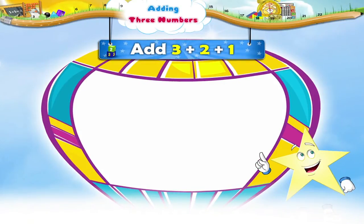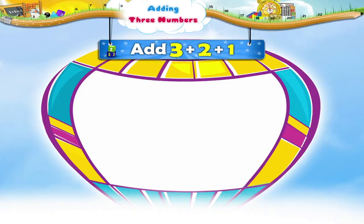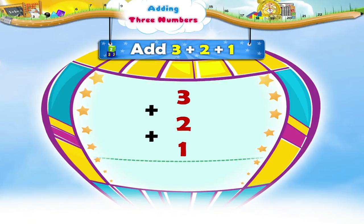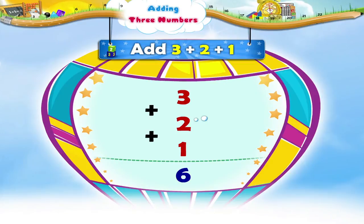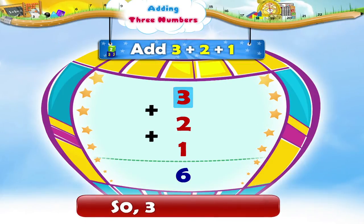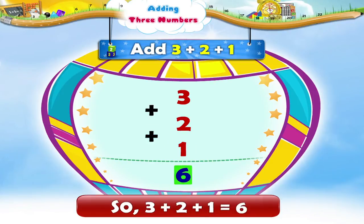Look at this sum. There are three numbers which we have to add: three plus two plus one. First we place these numbers vertically. Now three plus two equals five, and plus one equals six. So three plus two plus one equals six.